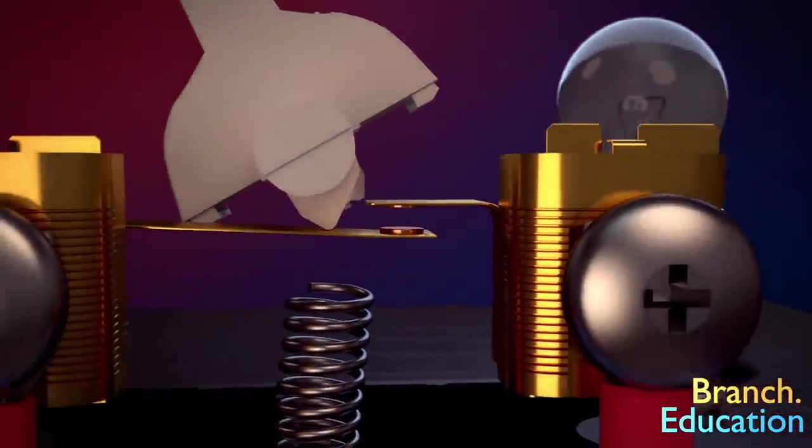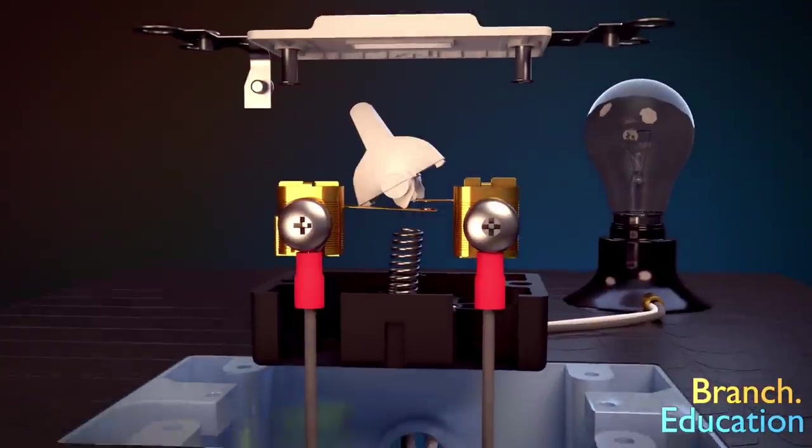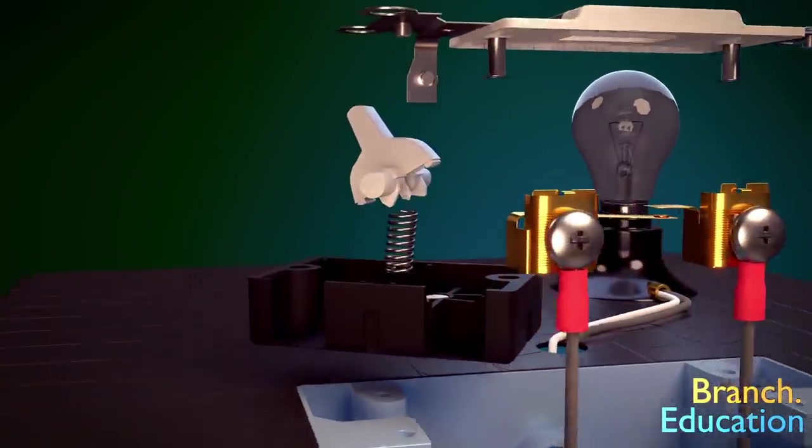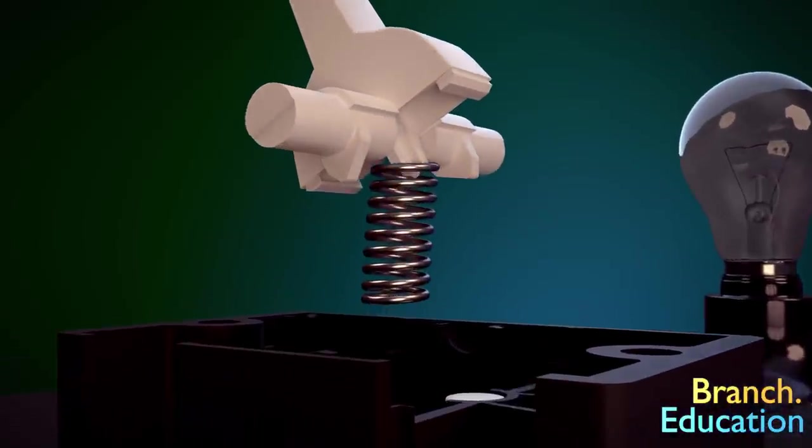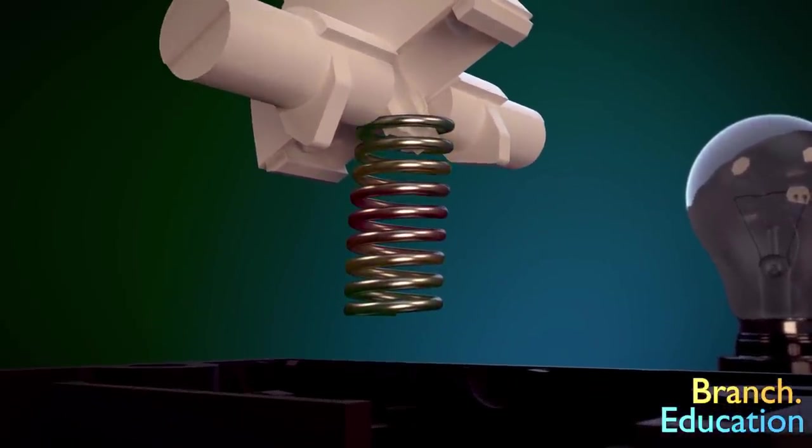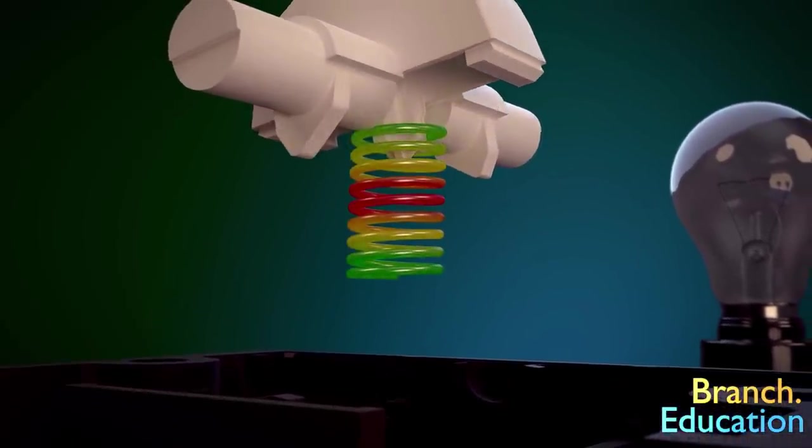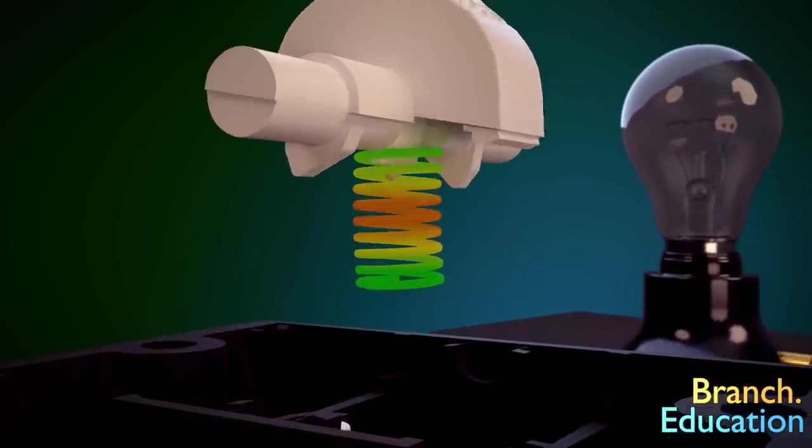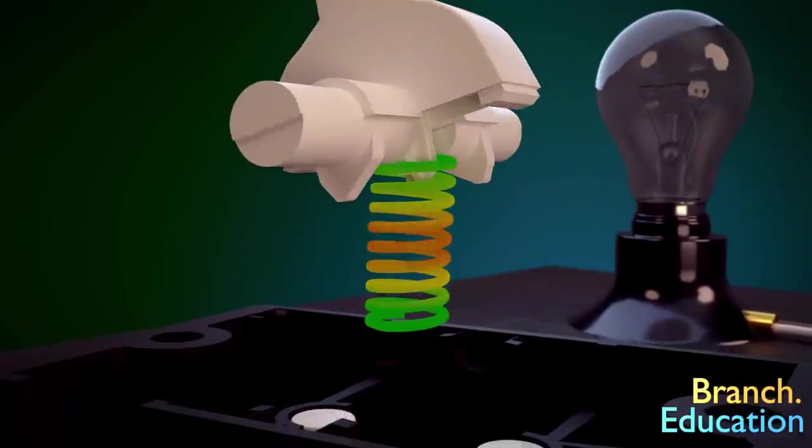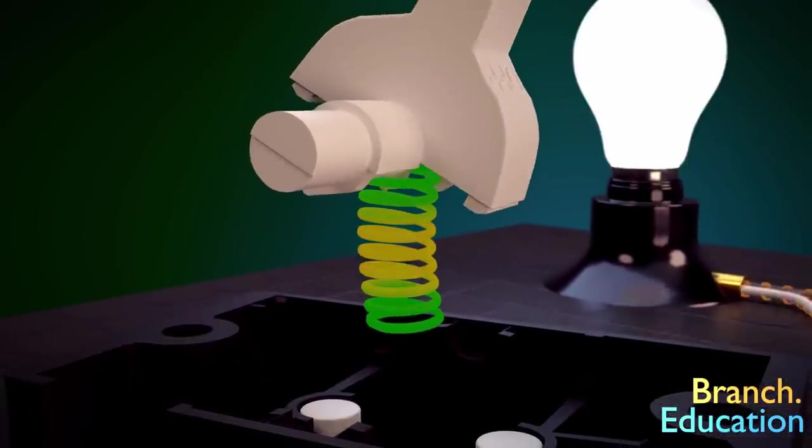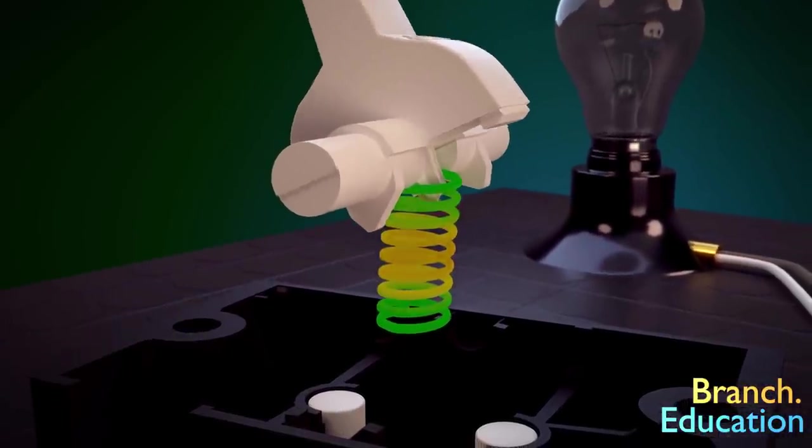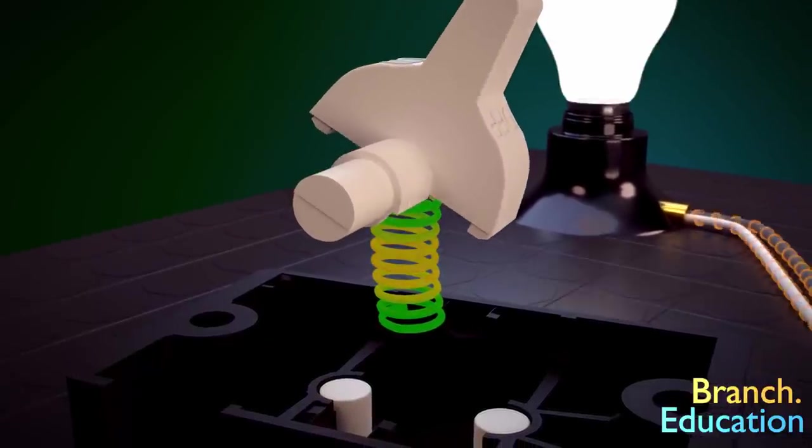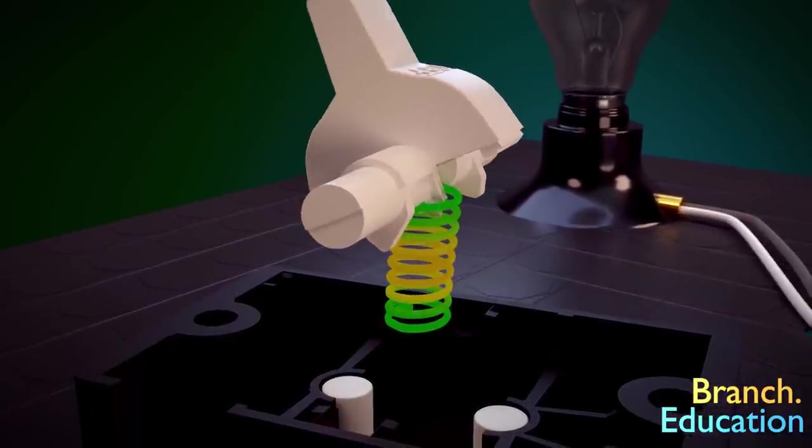There are a few other key components that enable this light switch to function properly. First, there's a spring in the center which presses on the bottom of the plastic toggle switch. This spring is in the middle of the on and off positions. The spring applies a force to the bottom of the toggle switch, which ensures that when the switch is not being flipped, it's either fully in the on position or fully in the off position and not somewhere in the middle.